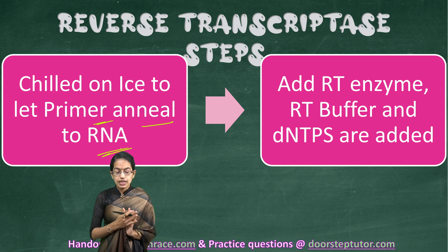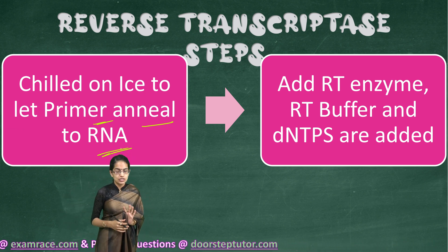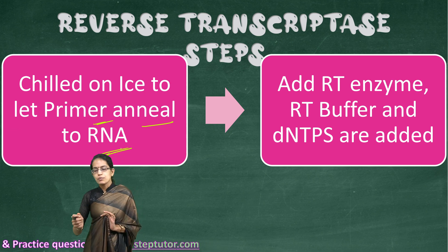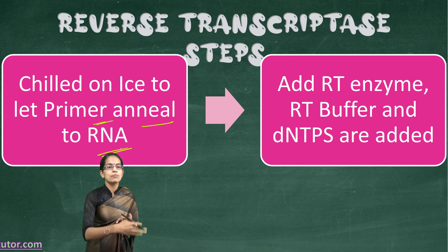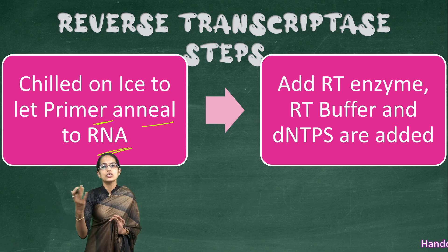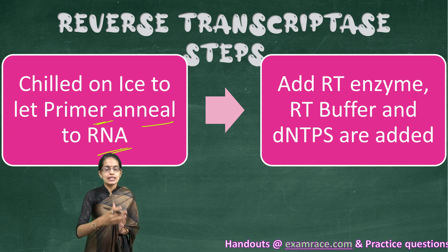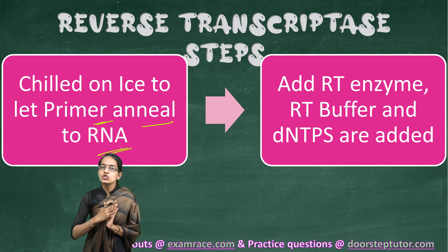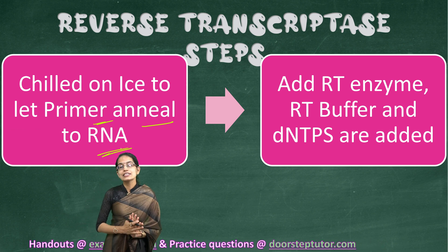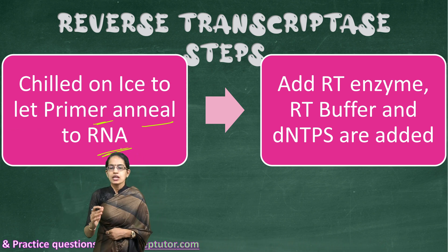This process of annealing is very important. What happens in a metal industry? In a metal industry, to remove impurities, you suddenly heat and then cool — and the same process happens in reverse transcriptase. You suddenly heat it at 70 degrees and then chill it, and after this chilling, the primer gets annealed to the RNA. This is where the start of the reaction takes place.